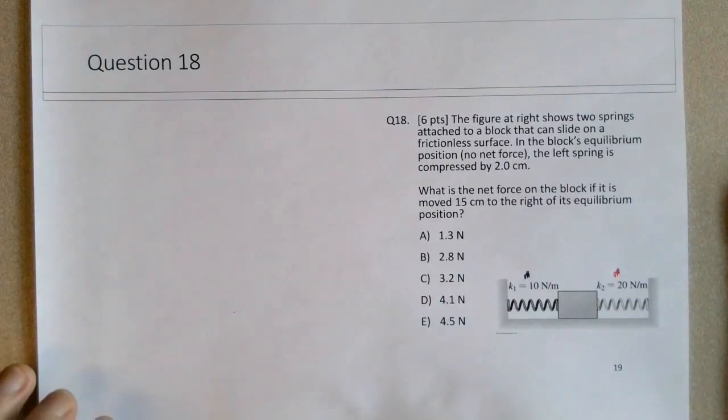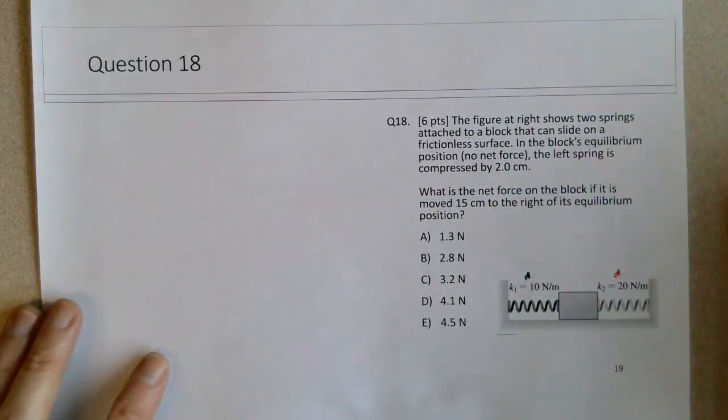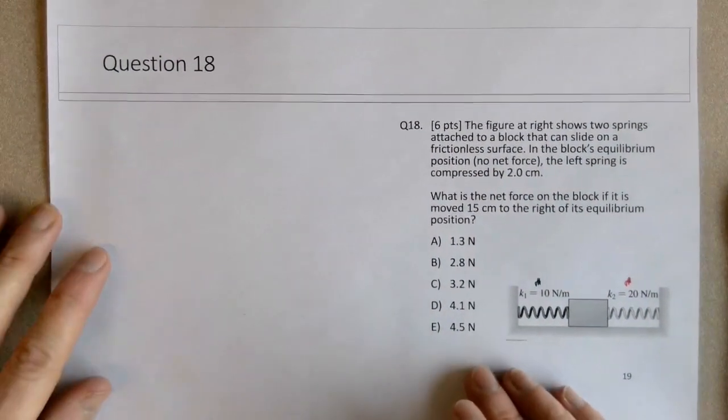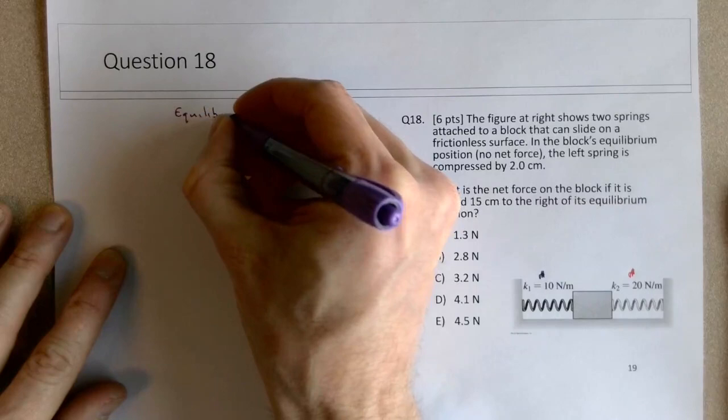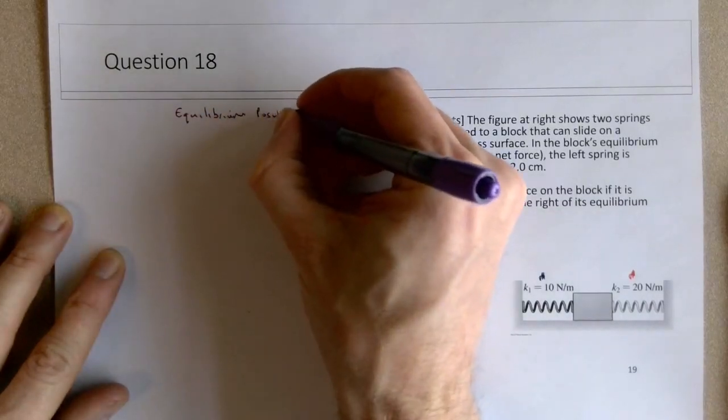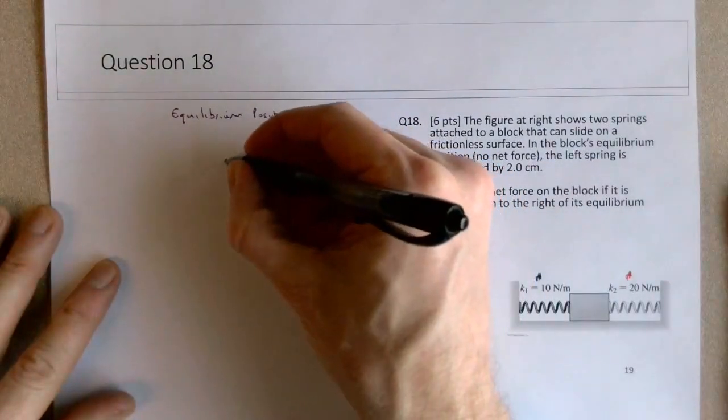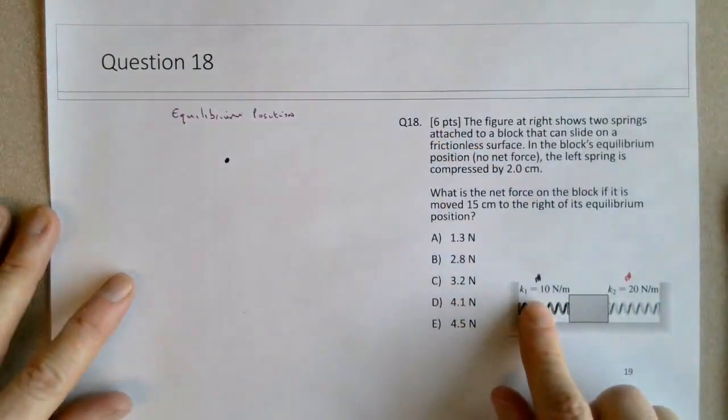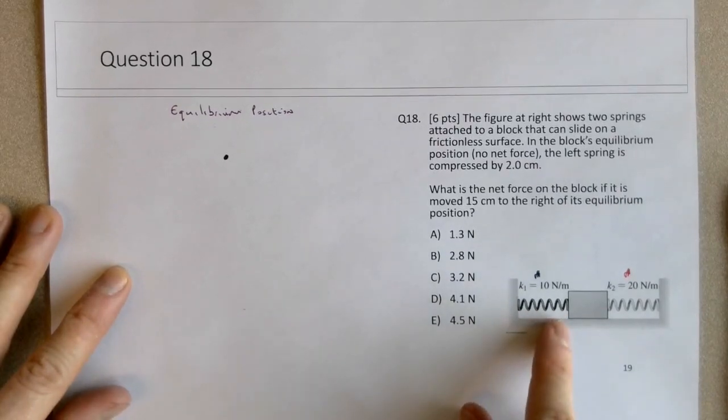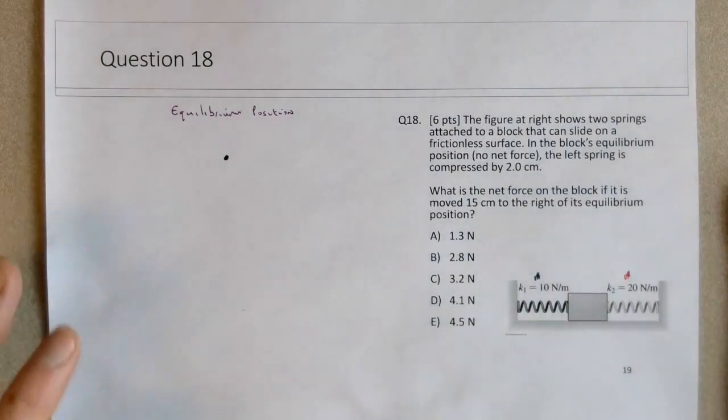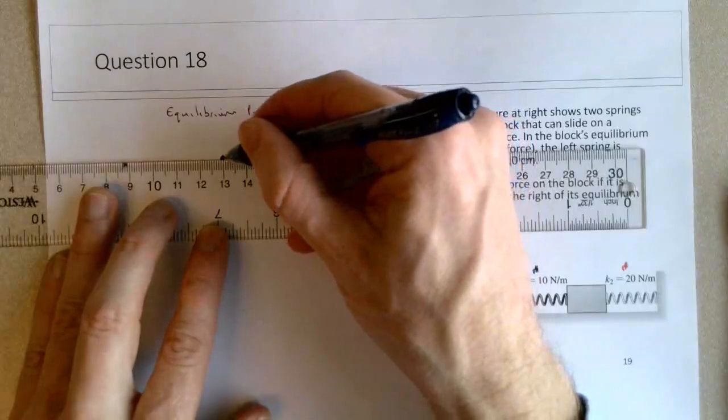So let's first look at the equilibrium, this idea that the block's equilibrium position where there's no net force, and let's consider a free body diagram when it's in its equilibrium position. In its equilibrium position, I'm just going to consider the horizontal forces. I know that spring 1 here, or the left spring, is compressed by 2 centimeters, so if the spring is compressed, it will push on the block to the right. So I'm going to draw a force here on the block.